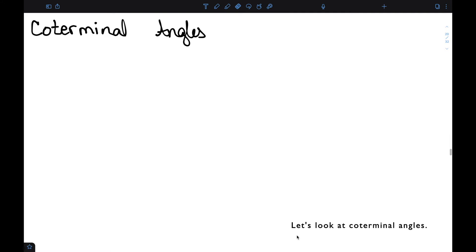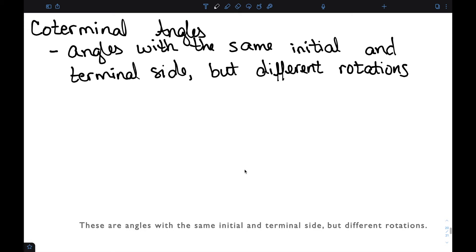Let's look at coterminal angles. I want to both define coterminal angles as well as discuss how to find them. These are angles with the same initial and terminal side but different rotations.